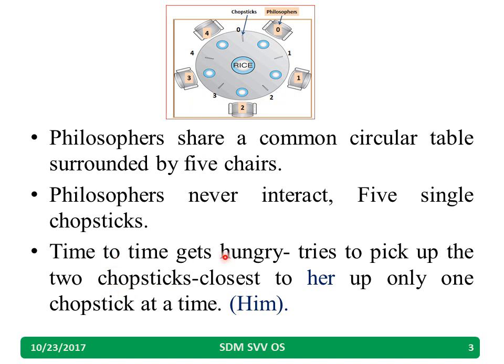From time to time a philosopher gets hungry and tries to pick up 2 chopsticks. For example, the zeroth philosopher wants to eat, so he will take chopstick 0 and chopstick 1, eat, and then put them back.